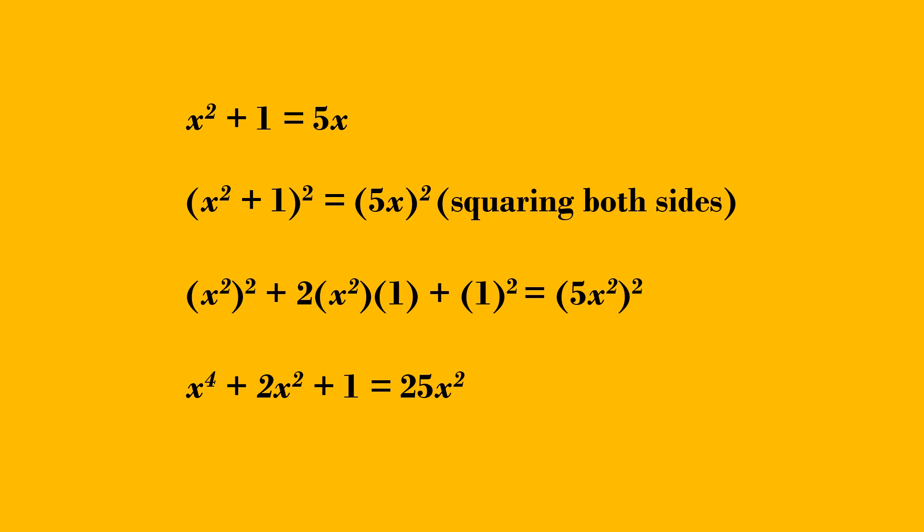So we get x power 4 plus 2x square plus 1 equal to 25x square.